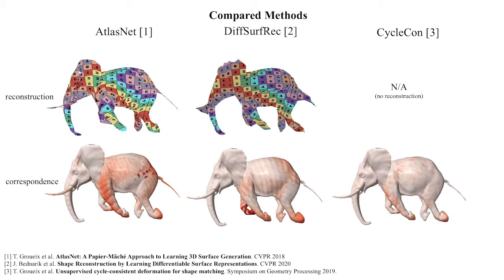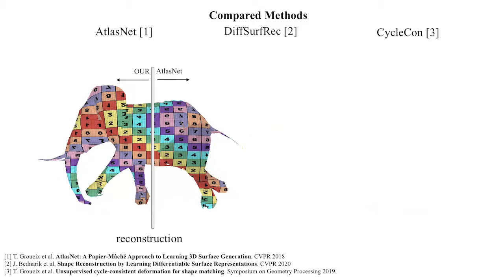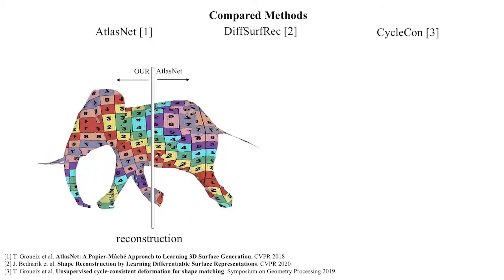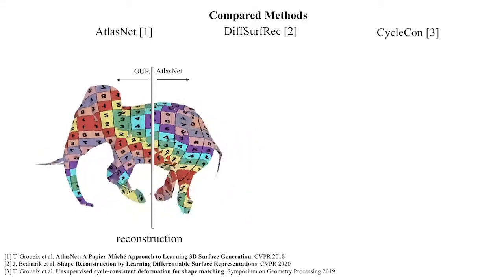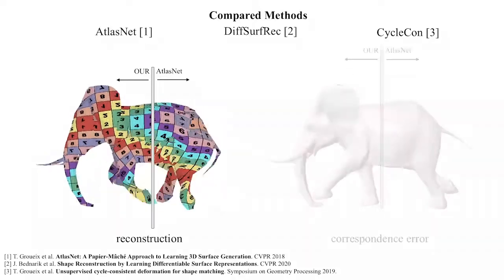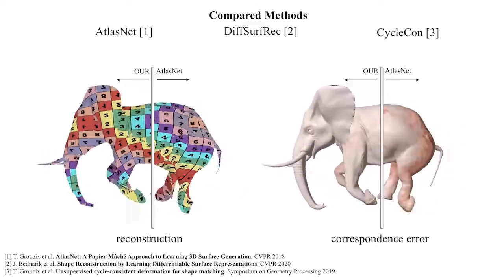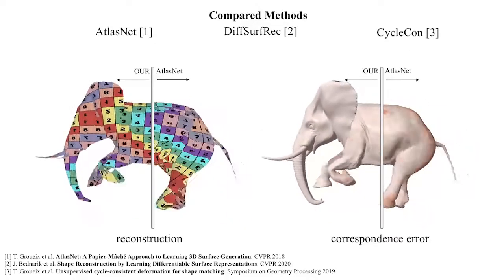We show the results in terms of reconstructions using the same texture for all methods, and in terms of the correspondence on the ground truth mesh, where the error is visualized in red. The visual tracking of a given coloured square over the sequence reveals how temporally coherent a given method is. Note how the reconstructed surface flickers when AtlasNet is used, in contrast to our method, and note how our method exhibits almost no red color in comparison to AtlasNet.